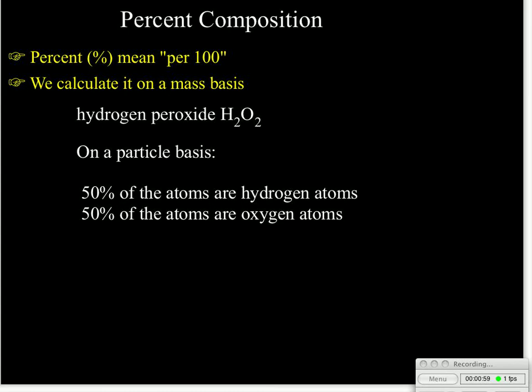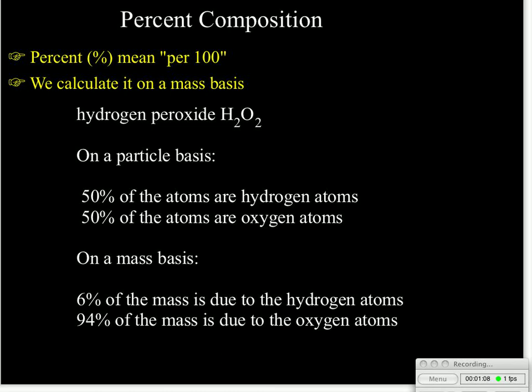If we look at this we say an oxygen atom has significantly more mass than a hydrogen atom, and if we were to calculate it we'd find that 6% of the mass is due to hydrogen and 94% of the mass is due to oxygen. And we'll take a look and say how do you make those calculations.